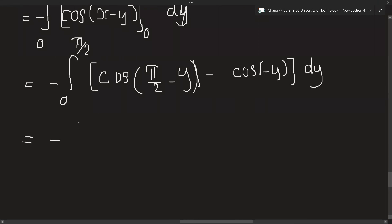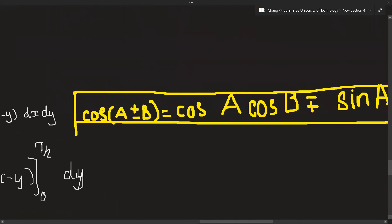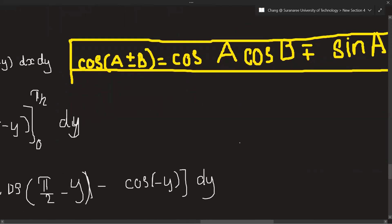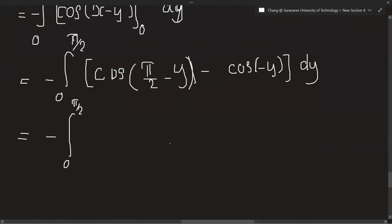So minus, from 0 to pi over 2. When we plus a minus will be here, we can see minus will be plus. So cos A cos B plus sin A sin B. So cos A will be cos pi over 2.